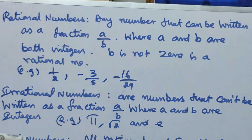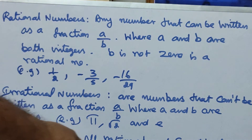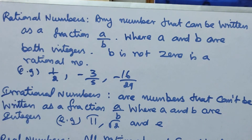Next, real numbers. All rational and irrational numbers make up this set of real numbers.